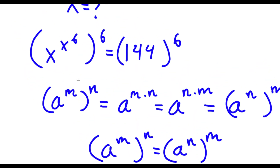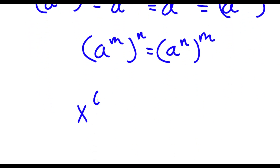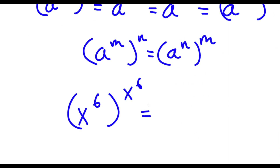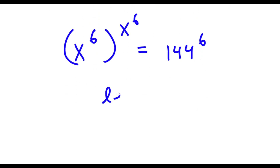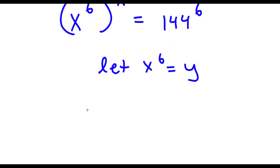So in this case, we have x to the power of x to the power of 6, all to the power of 6. We can think of x to the power of 6 as m and 6 as n. So now we can switch these two places, giving us x to the power of 6 to the power of x to the power of 6, which is equal to 144 to the power of 6. Now I'm going to let x to the power of 6 equal the variable y.